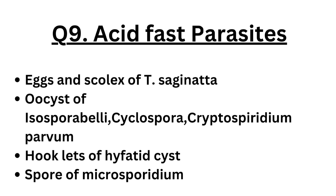Acid-fast parasites: the scolex of Taenia saginata, oocysts of Isospora belli, Cyclospora and Cryptosporidium parvum, hooklets of hydatid cyst, and spores of Microsporidium.